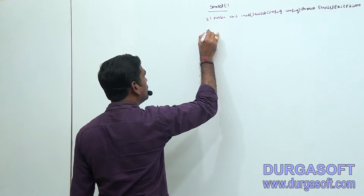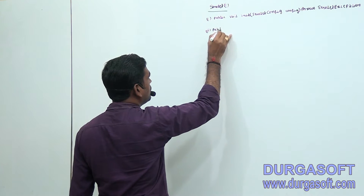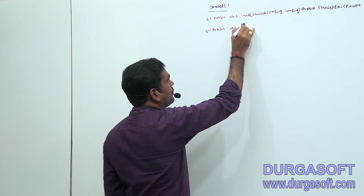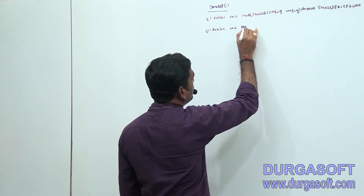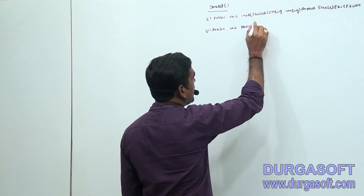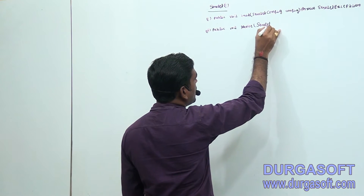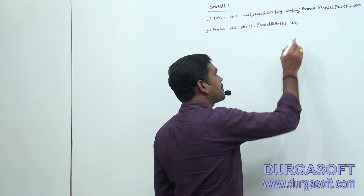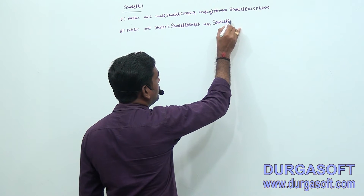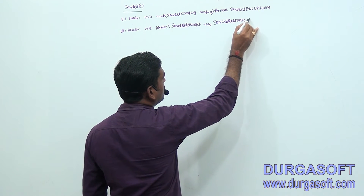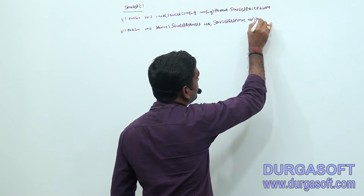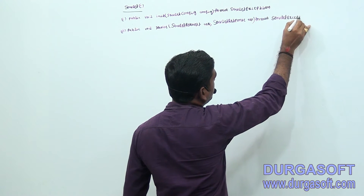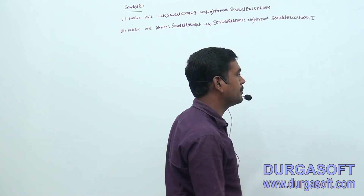Number two: public void service. This method has two parameters. Number one: ServletRequest req, and the next: ServletResponse res — throws ServletException, IOException.